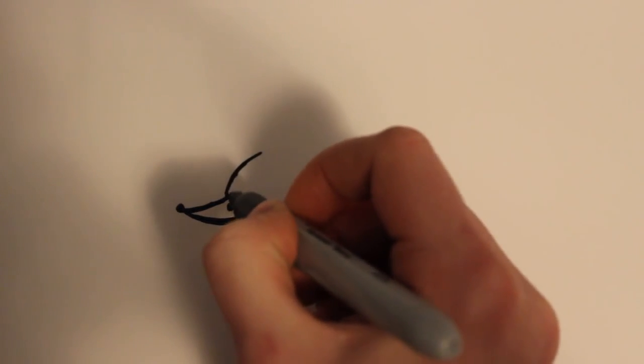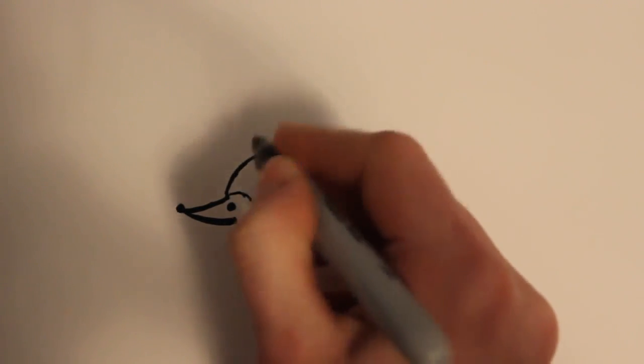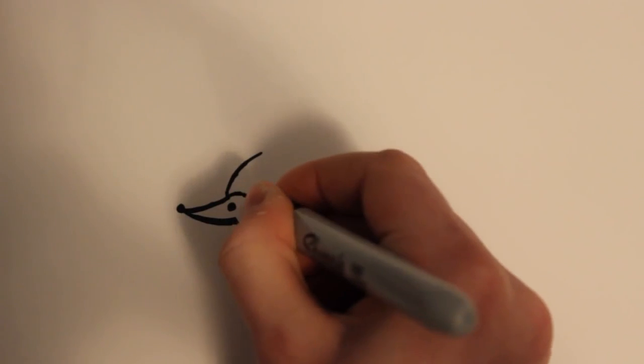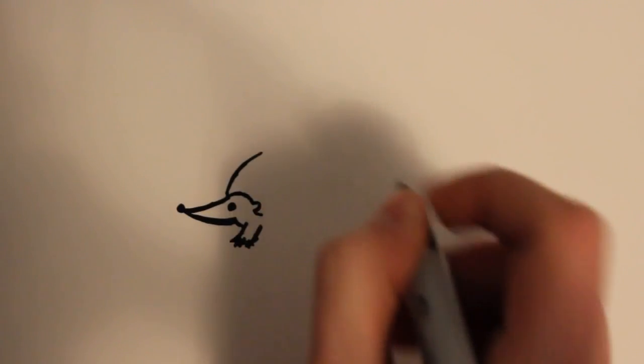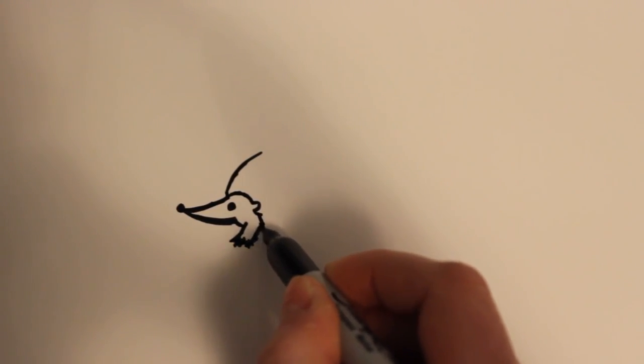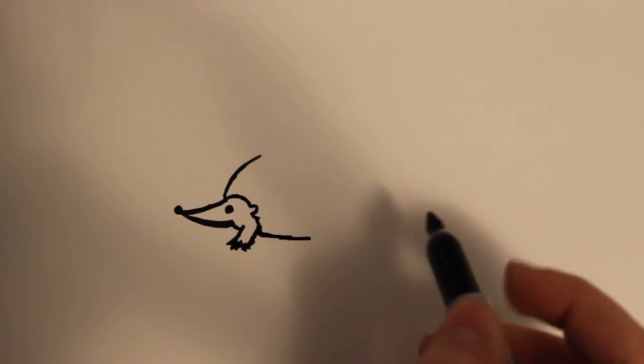And then right away you can draw the room, just kind of like an arch there, and then the ear. And then this can come all the way down into his belly like that.